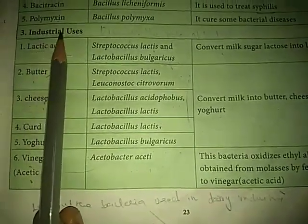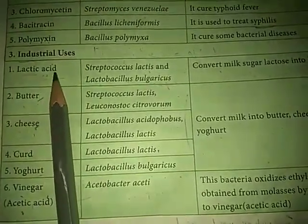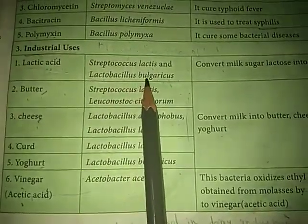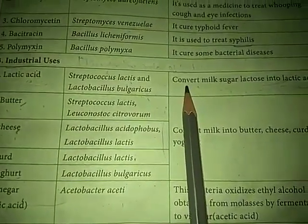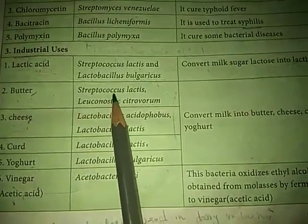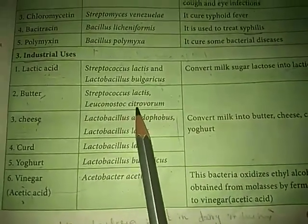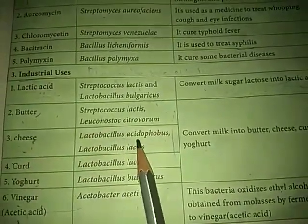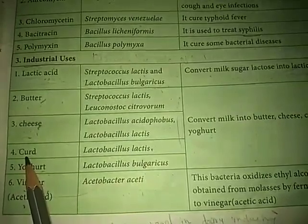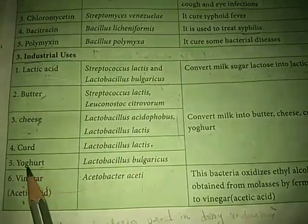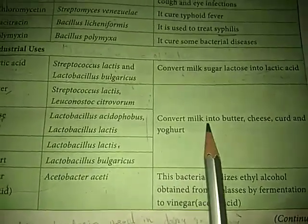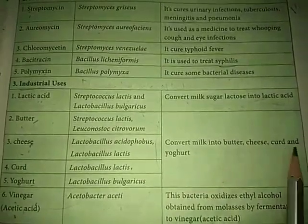Another beneficial aspect — industrial uses. Lactic acid: the bacteria Streptococcus lactis and Lactobacillus bulgaricus convert milk sugar (lactose) into lactic acid. Second — butter, produced by Streptococcus lactis and Leuconostoc citrovorum. Cheese is produced by Lactobacillus acidophilus and Lactobacillus lactis. Yogurt is produced by Lactobacillus bulgaricus. These bacteria convert milk into butter, cheese, curd, and yogurt.